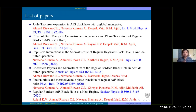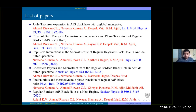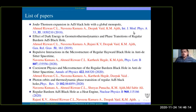Some of the papers we have published during this time: we have published six papers in prestigious journals like Nuclear Physics B, Physical Review D, Annals of Physics, Physics Letters B, General Relativity and Gravitation, and the International Journal of Modern Physics, with several others under review.